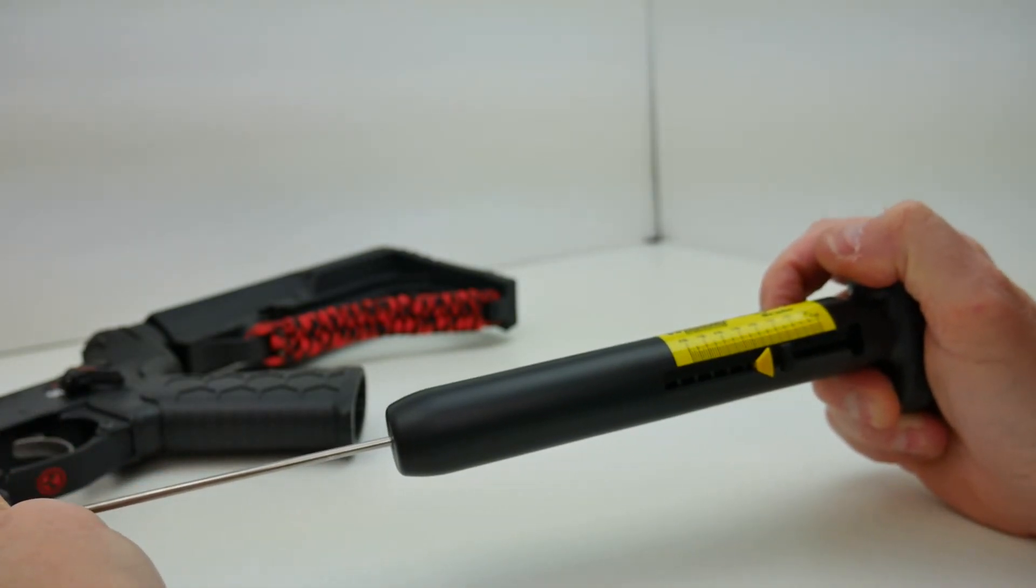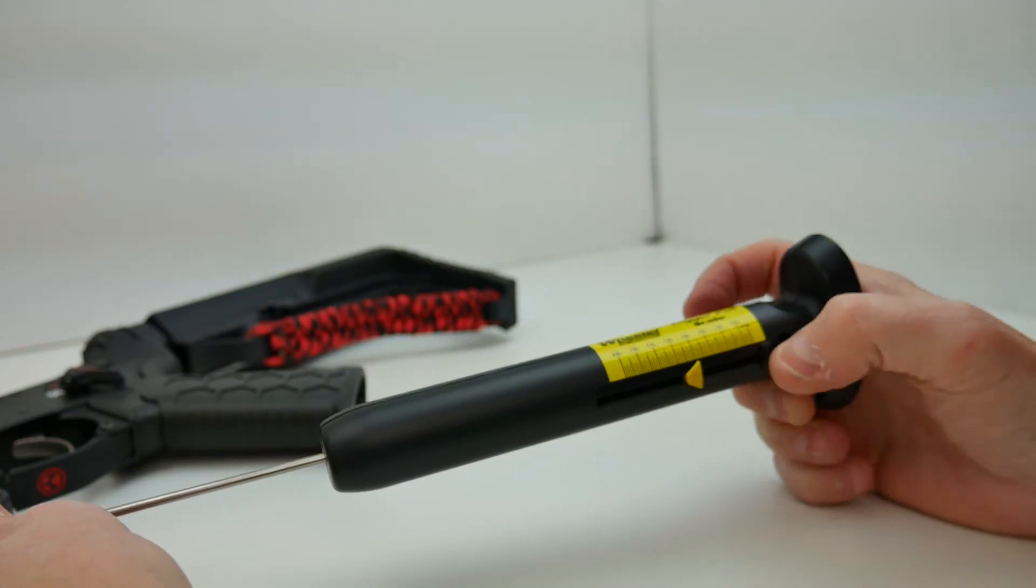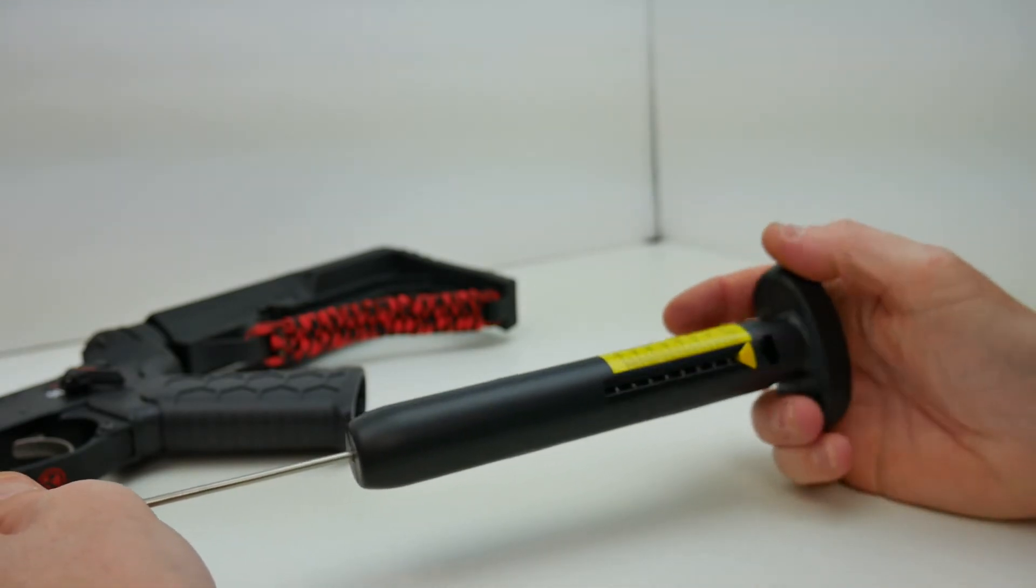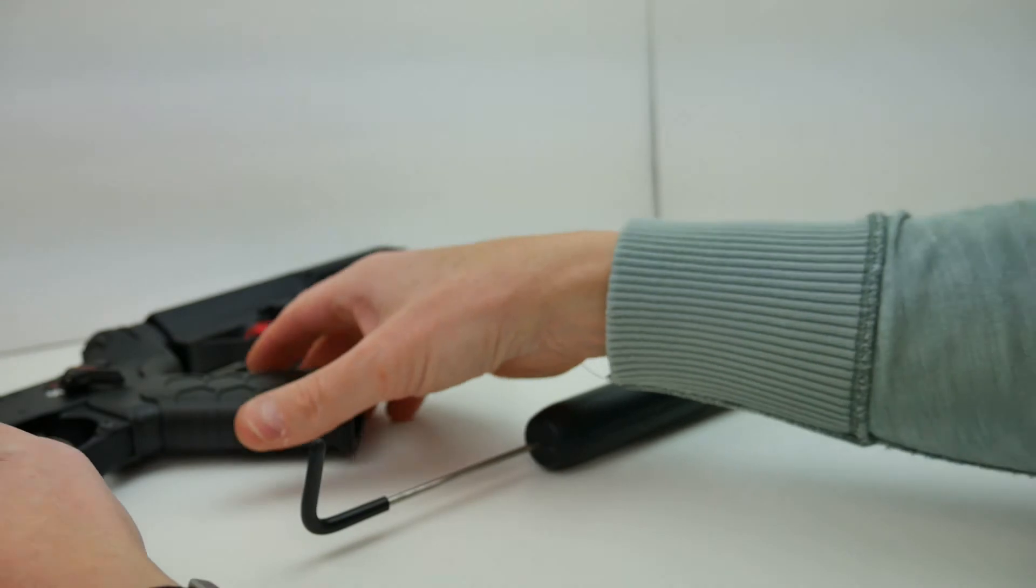You basically just pull on this and when your trigger releases this pops back and your little marker is left and that tells you basically what your pull weight is. So we're going to demonstrate this on camera.